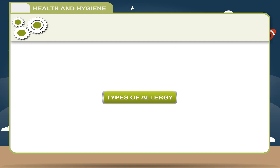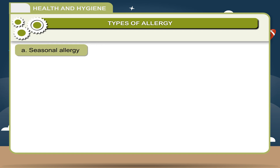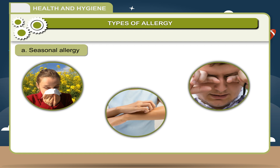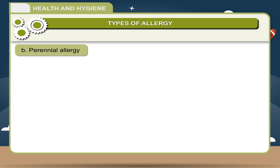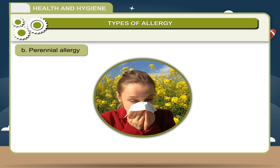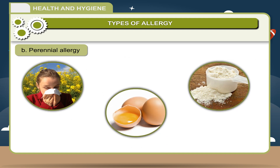Types of Allergy. Allergy can be of two types. A. Seasonal Allergy — occurs during change of season, with symptoms like breathing problems, skin and eye itching. B. Perennial Allergy — persists for a long time; for example, a person could be allergic to different edible items, such as egg protein or milk protein.